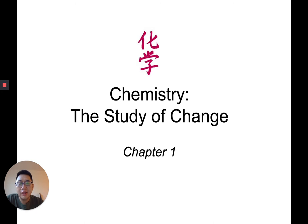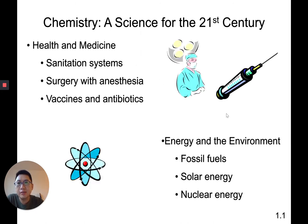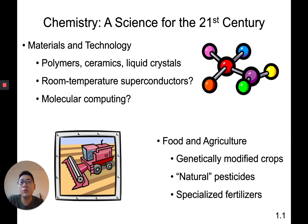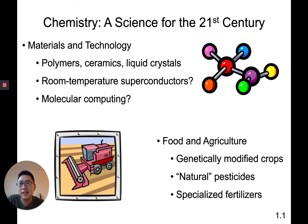There are many different branches of chemistry, and chemistry is used in many areas. It's used in health and medicine — sanitation, surgery with anesthesia, vaccines, antibiotics. It's used in energy and environment — fossil fuels, solar energy, nuclear energy. It's also used in materials and technology — polymers, ceramics, liquid crystals, semi-superconductors — and in food and agriculture — genetically modified crops, natural pesticides, and specialized fertilizers.